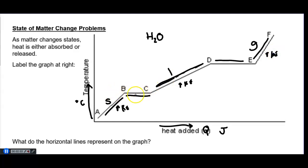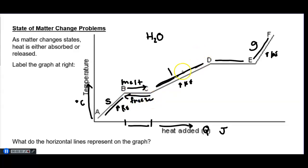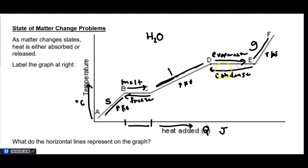On these flat lines there's no change in temperature, but energy is being added. All of the energy going in is causing a change in phase. From B to C it's going from solid to liquid — a phase change called melting. If energy is released, the matter freezes. Adding energy as a liquid, temperature increases, then we hit the boiling point from D to E. Temperature stays the same but now we have evaporation; if there's an energy release, we have condensation. No change in temperature even though energy is being absorbed or released.